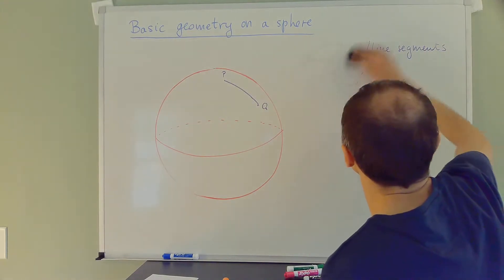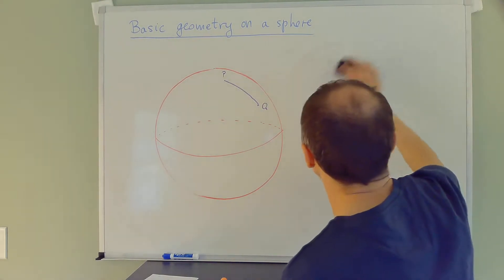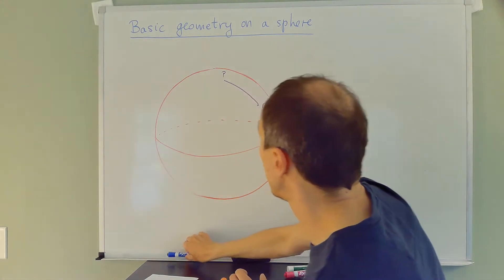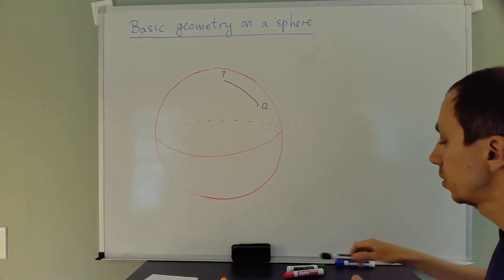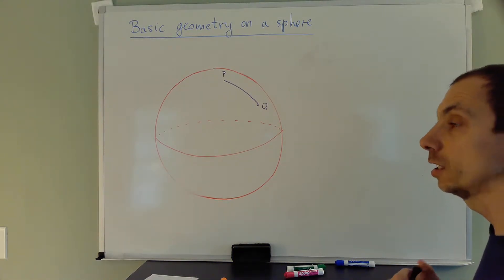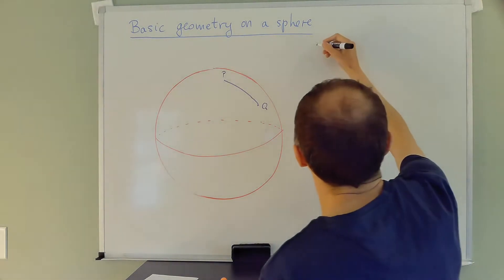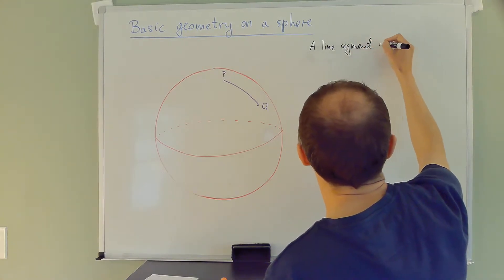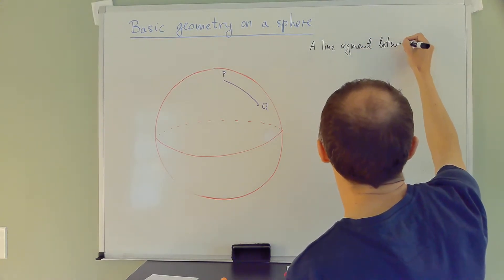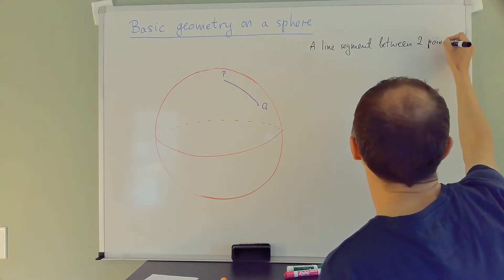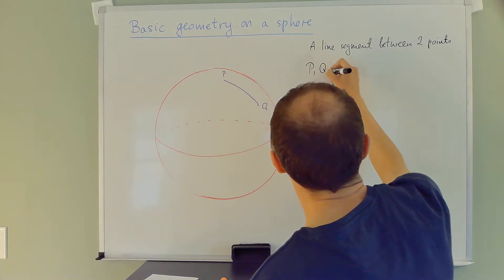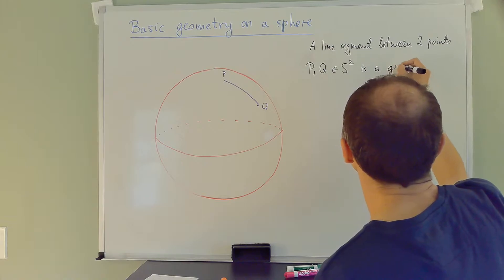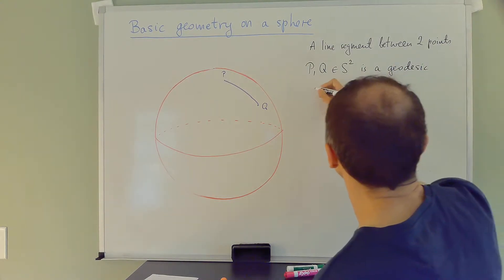So let's make this our definition. These definitions are only here to give you analogs of notions from standard geometry and how they can be recast on the sphere. I would say a line segment between two points P and Q on the sphere is a geodesic joining them.